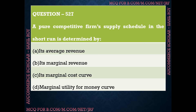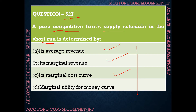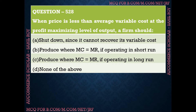Question number 527: A pure competitive firm's supply schedule in the short run is determined by — options are: average revenue, marginal revenue, marginal cost curve, and marginal utility for money curve. The correct answer is option C — a pure competitive firm's supply schedule in the short run is determined by its marginal cost curve.